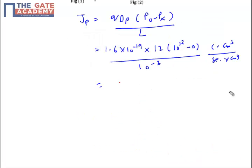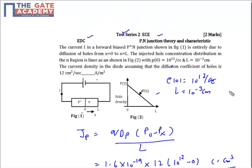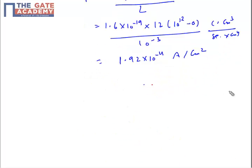We need to change the units because we will get the answer as 1.92 × 10⁻⁴ ampere per cm². The problem requires the answer in m², so I need to change it and multiply.